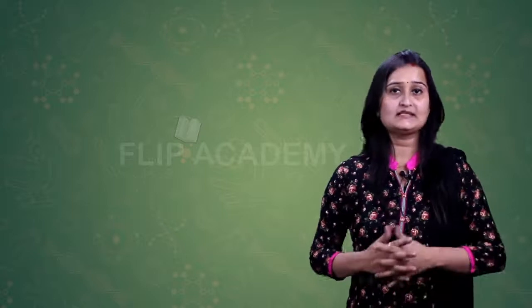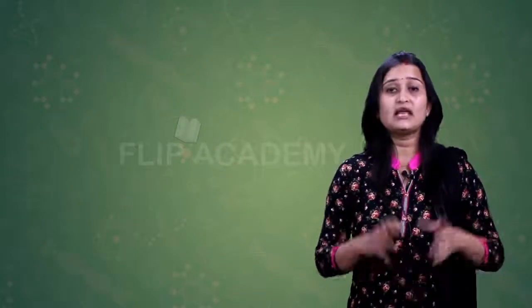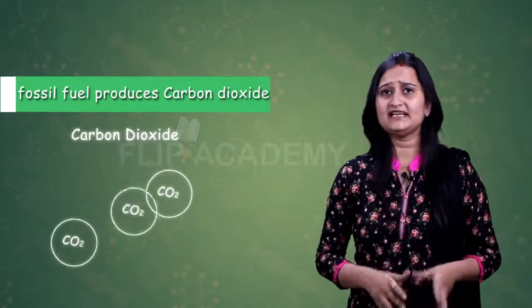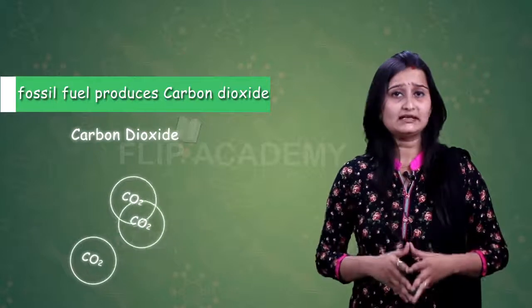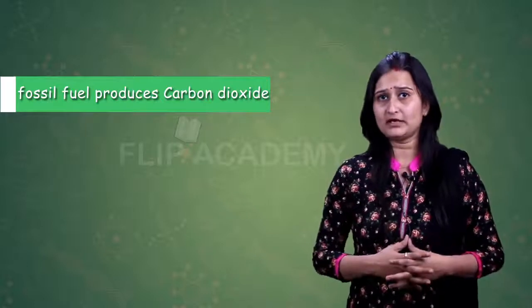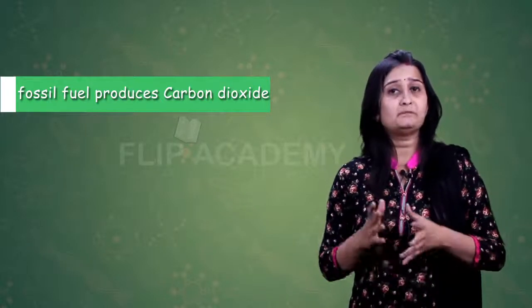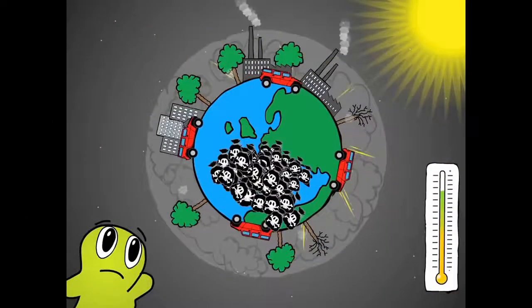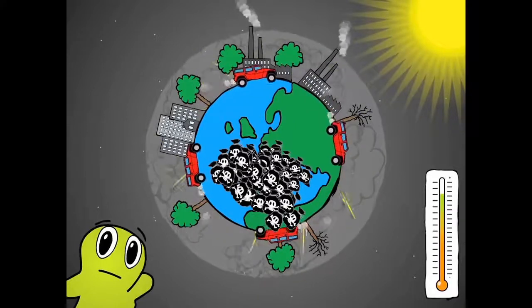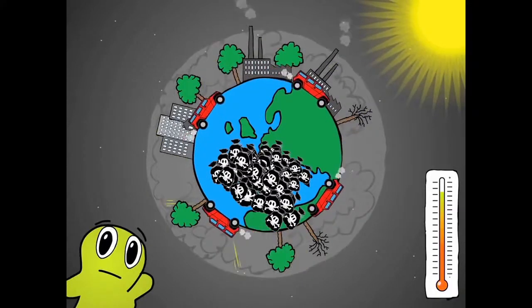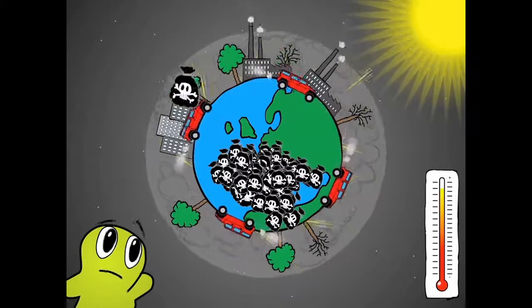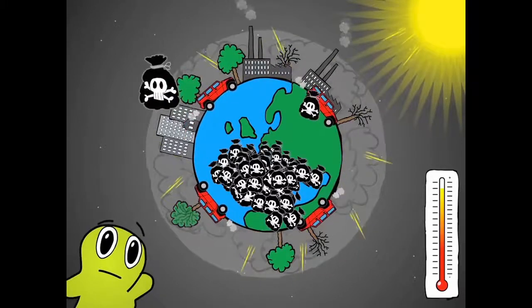The second point is fossil fuels produce carbon dioxide. Carbon dioxide is not poisonous to us, but it may affect us in the long run. When too much carbon dioxide is released in the environment, it increases global warming. It is a threat because when carbon dioxide is released into the environment, it increases the greenhouse effect. This greenhouse effect increases the temperature of the environment and thus is a threat for global warming.